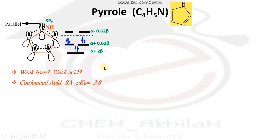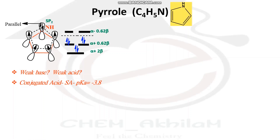Pyrrole is a weak base because the lone pair on the nitrogen atom takes part in the pi cloud, so there are no electrons remaining on nitrogen to act as a base. It is also a weak acid because on protonation, aromaticity is lost. However, the conjugate acid will be a strong acid with a pKa value of minus 3.8. So pyrrole is both a weak base and a weak acid.